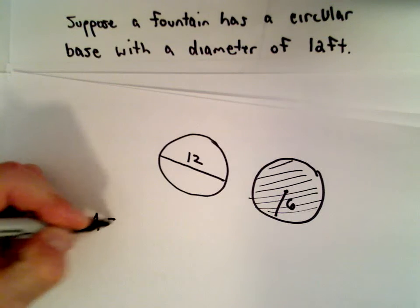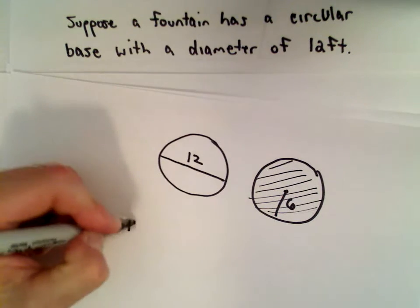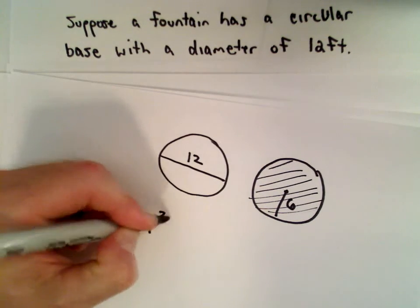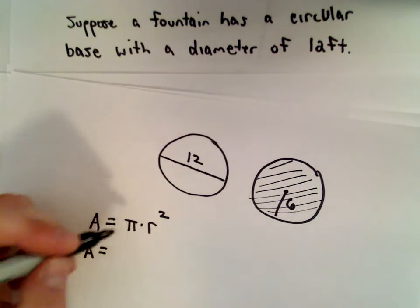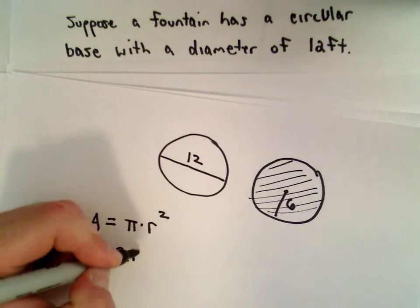Well, the area of a circle, recall that that's pi times the radius squared. We're going to approximate pi by using 3.14.